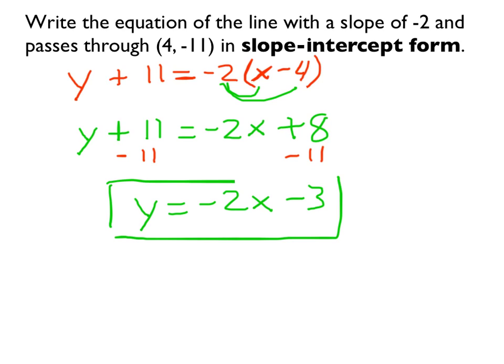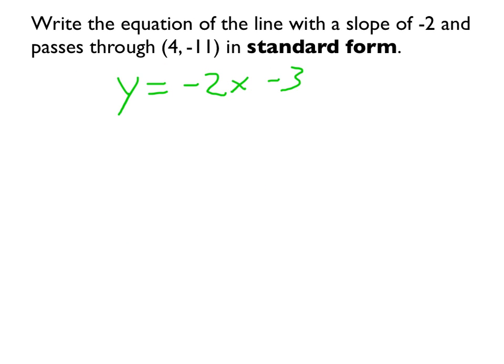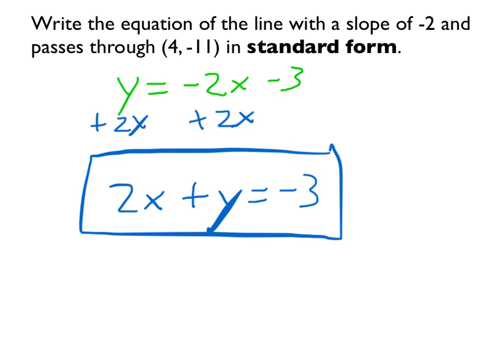Now we'll use that for the next part, where we want to get standard form. So let's hold on to that equation. So standard form asks for the x term and the y term to be on one side of the equation. So what we need to do is add 2 to both... Pardon. Add 2x to both sides. So we're left with 2x plus y is equal to negative 3. And that is standard form.